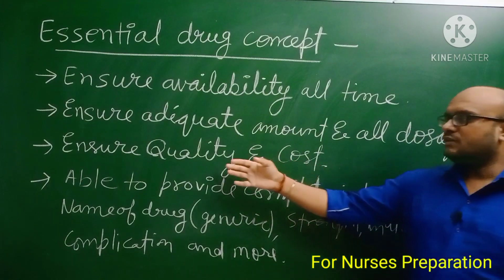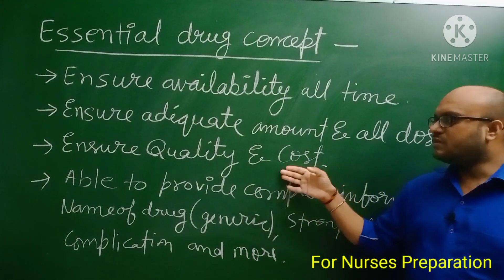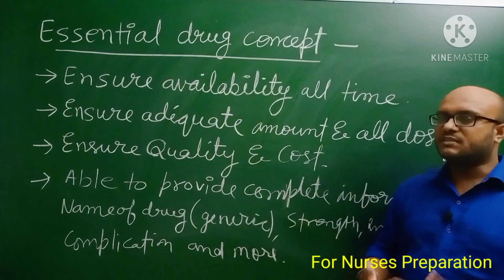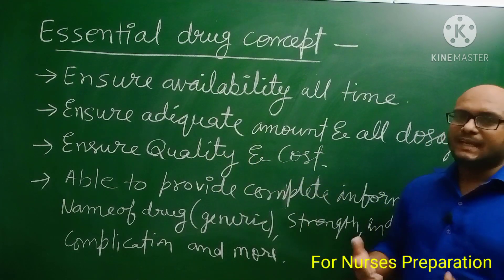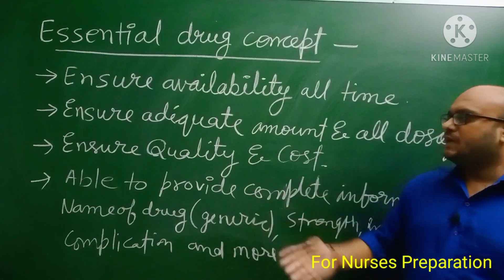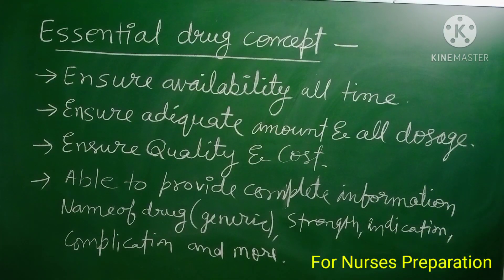Third point is ensure quality and cost — we prefer to include drugs which are cost-effective, best in quality, and with less side effects. Fourth point is to be able to provide complete information like name of drug in generic manner, strength, indication, complications, and more.